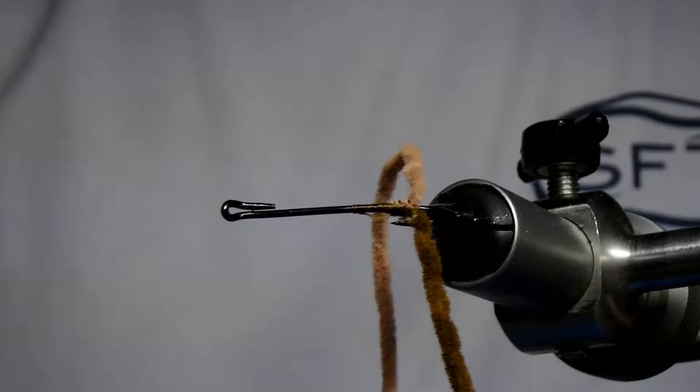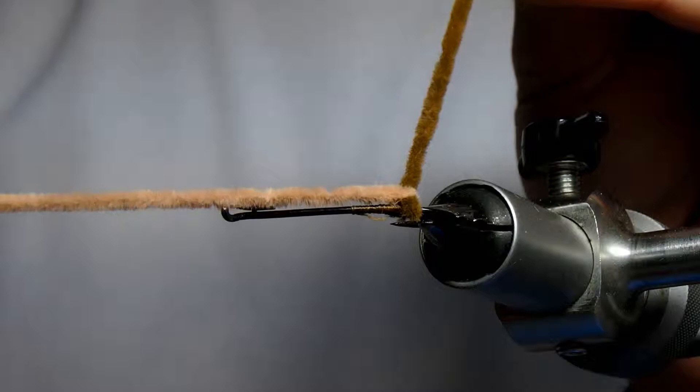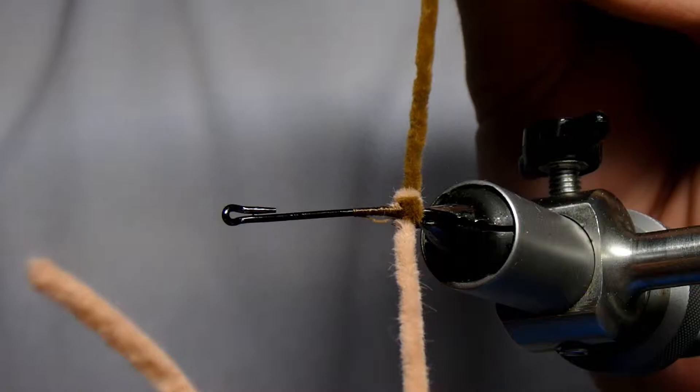So you want to start by taking the dark strand, going over the top of the hook, taking the lighter strand, going over the top of your brown strand, parallel to the hook, and then go underneath.